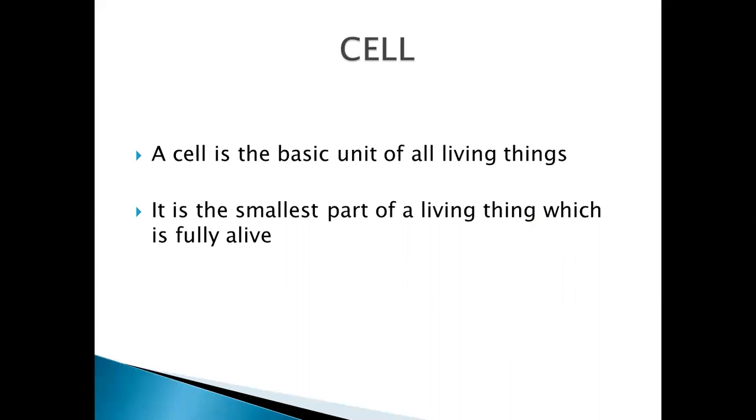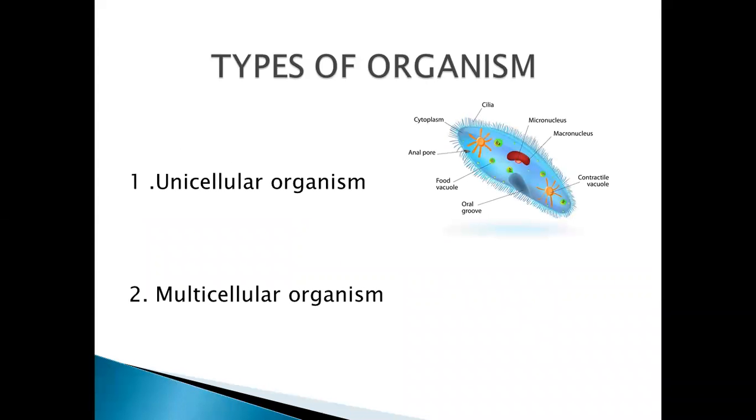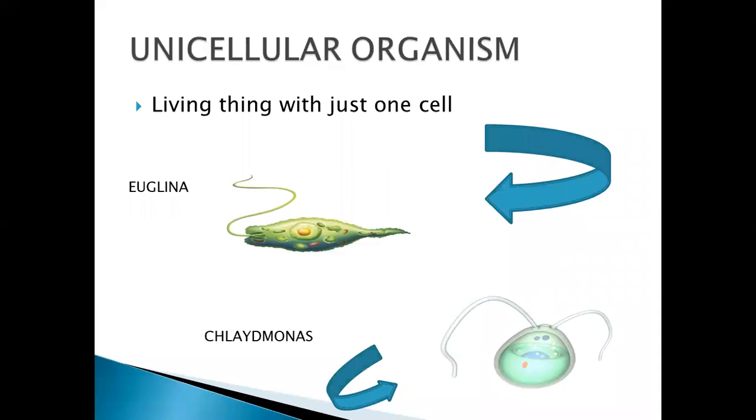Cell is the smallest part of every living organism. If we talk about number of cells, on the basis of number of cells there are two types of organisms: one is unicellular organism and the other one is multicellular organism. Firstly we will discuss unicellular organism.